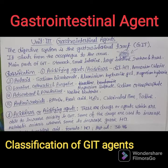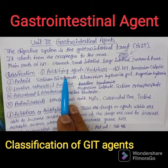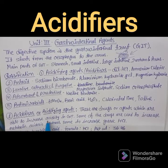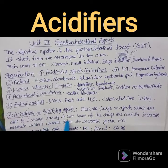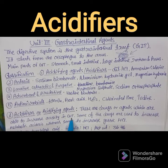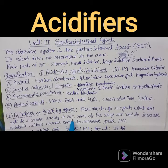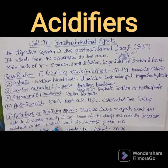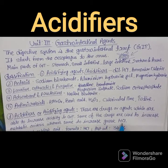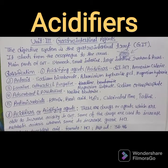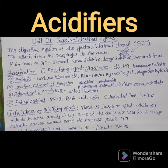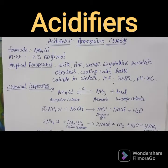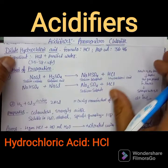Now coming to the acidifying agents or acidifiers in detail. These are drugs or agents that are able to increase acidity in the GIT. Sometimes we need acid levels to increase, so we use acidifiers. Some of these drugs increase metabolic acidosis, whereas others increase gastric hydrochloric acid. The ultimate goal is to increase the acid content in the GIT.